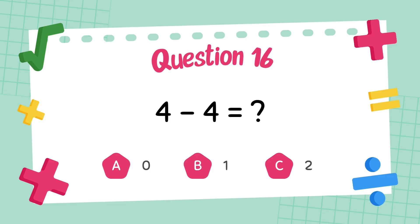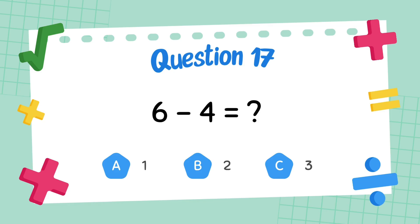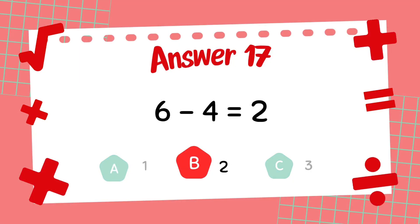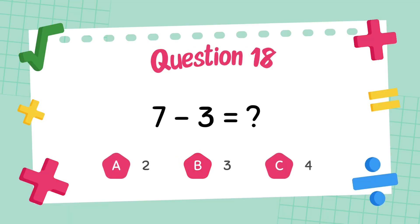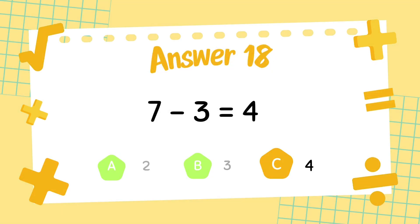What is four minus four? The answer is zero. What is six minus four? The answer is four. What is seven minus three? The answer is four.